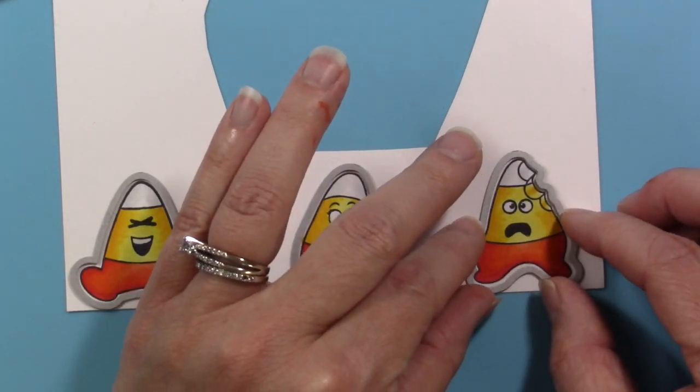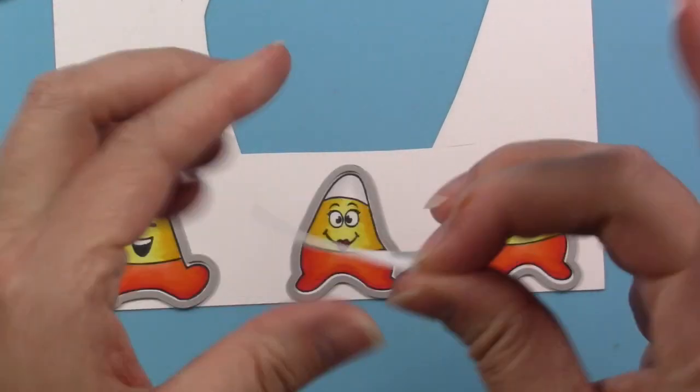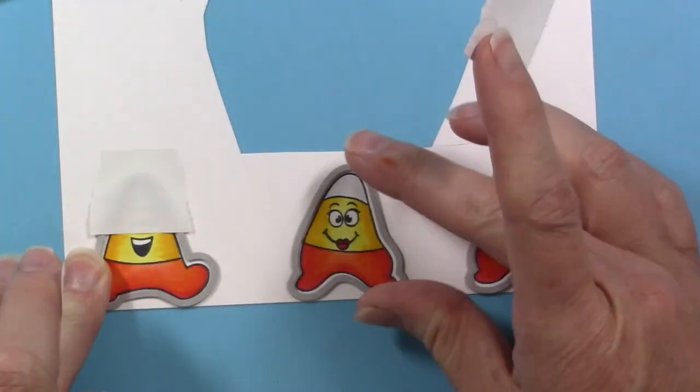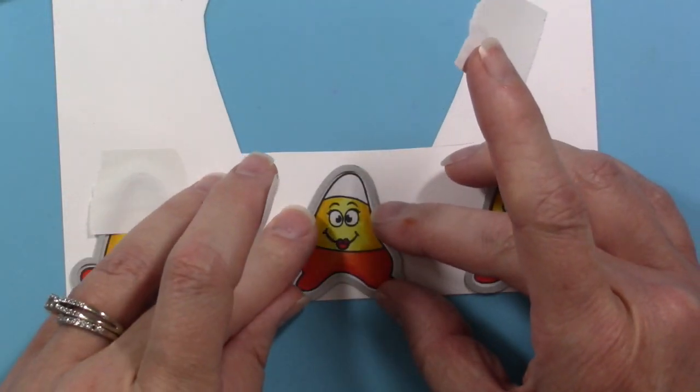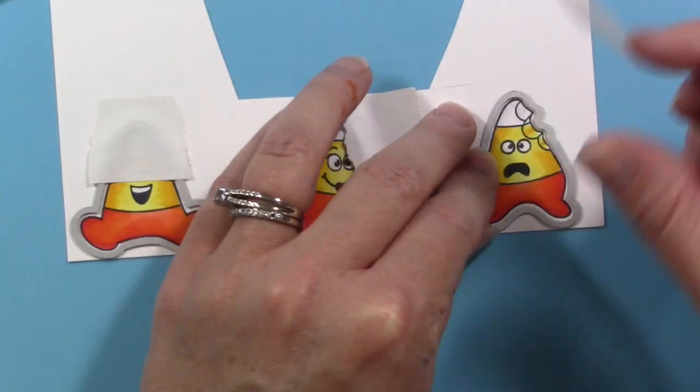Also in the kit, you get these adorable little candy corn die cuts to make your life easy, although they are very easy to cut out if you like to fussy cut. I showed that in a previous video, but for this one I'm going to use the die cuts that come in the kit, then set those aside and start assembling my card.